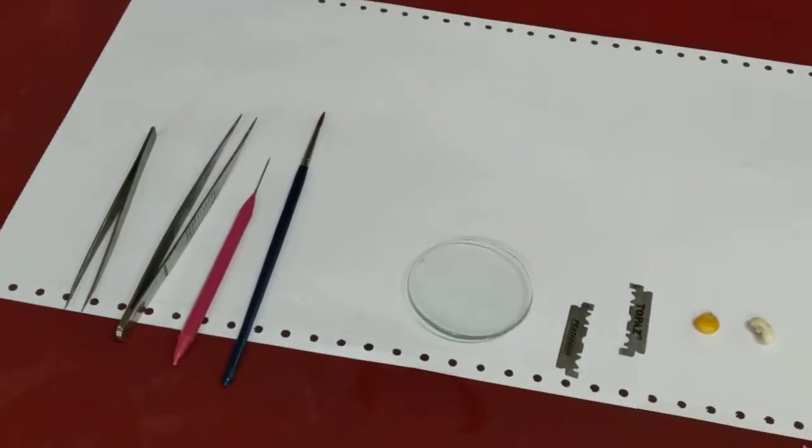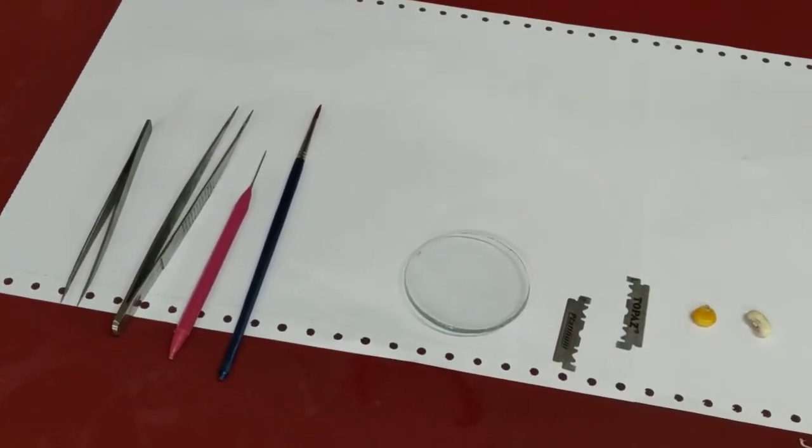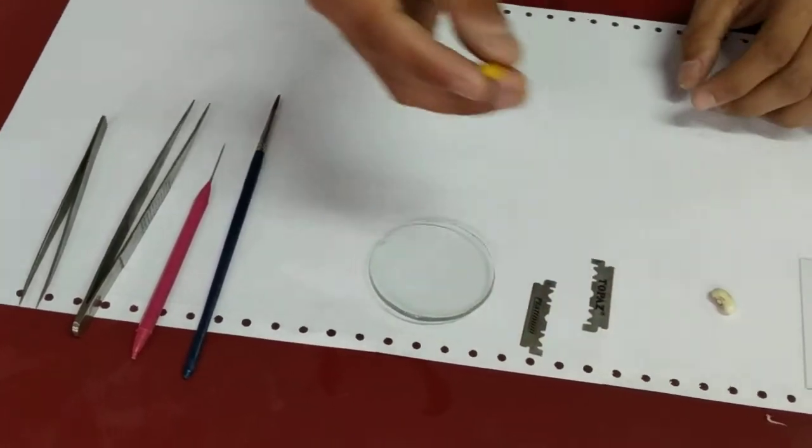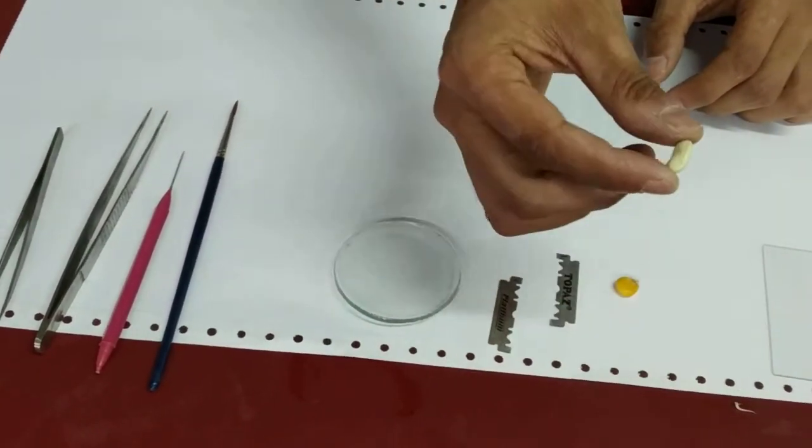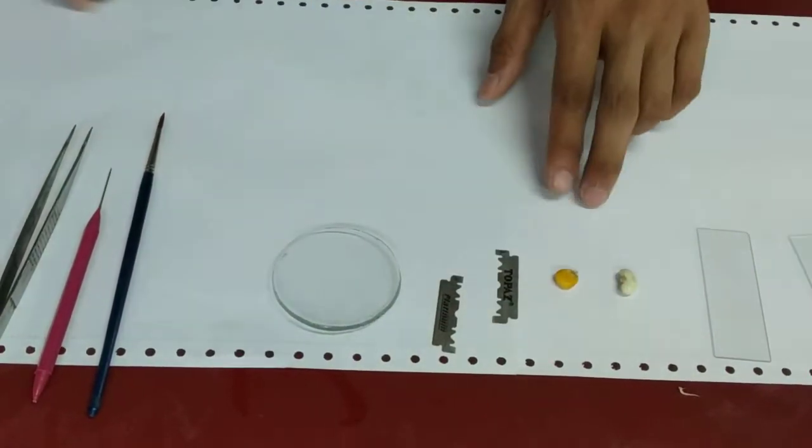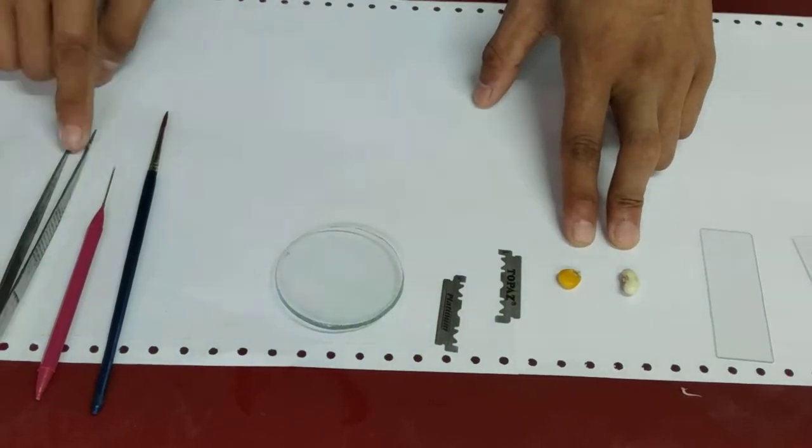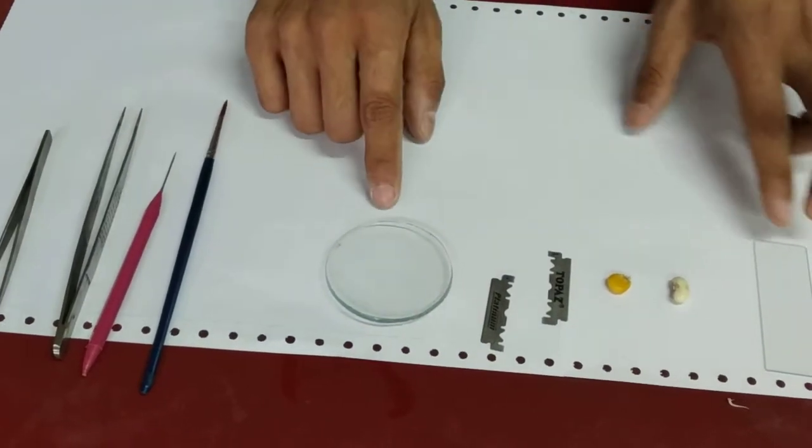In the preparation of permanent slides, the first thing you are going to need is the specimens. For monocot we are taking a maize and for dicot we are taking a bean seed. In addition to the two specimens you will require forceps, needle, brush or watch glass.